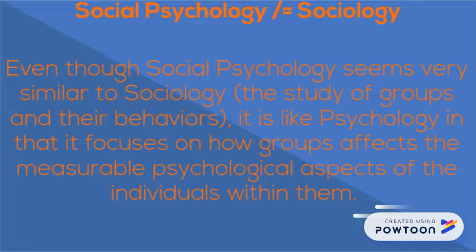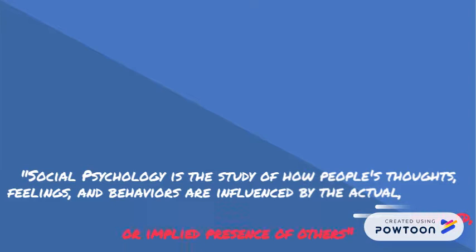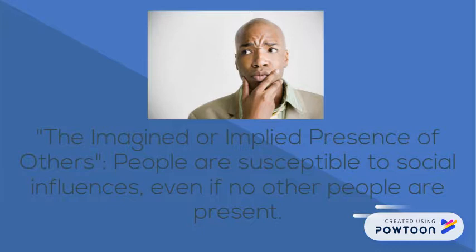As in the study of psychology, social psychology also includes the psychological factors that are measurable in a human being. The part of the definition pertaining to the imagined or implied basically states that people are susceptible to social influences, even if no other people are present.